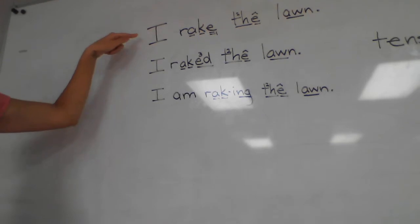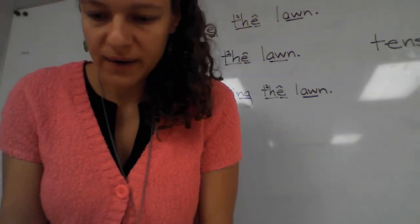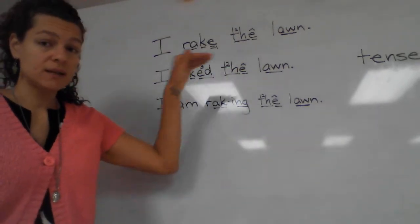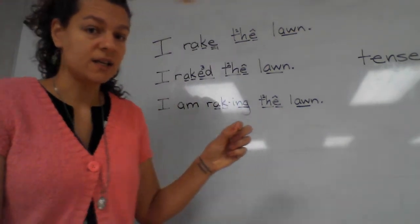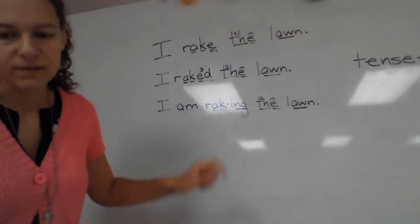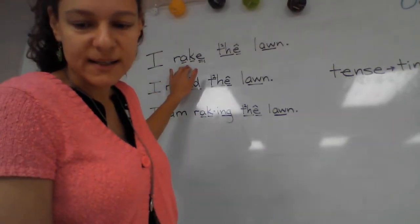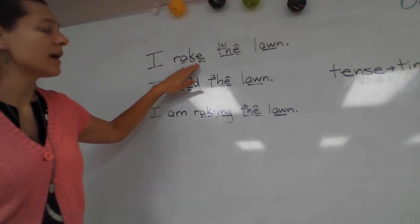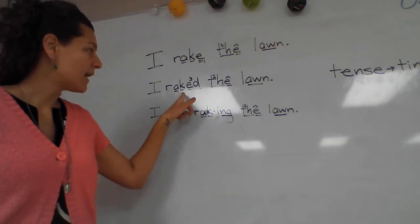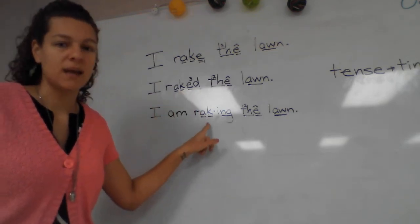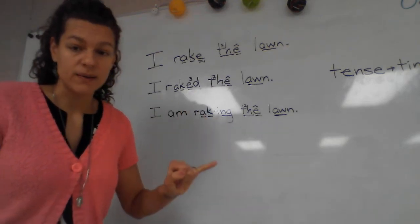Let's look at our first one: I rake the lawn. It's also present — it's happening now, but it's not ongoing and continuing like it was in our third sentence. So this is our present tense. This is our regular present tense, which we usually learn first. And then we know how to make it past tense, and how to make it present and continuing by adding these different vowel suffixes.